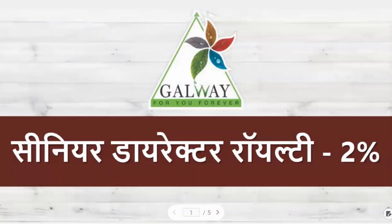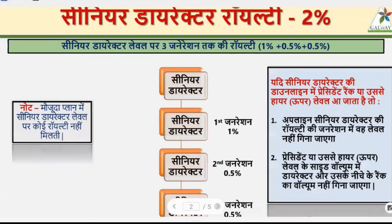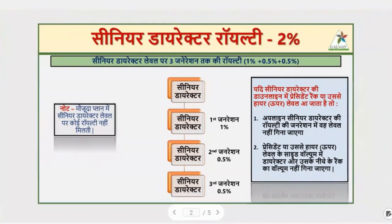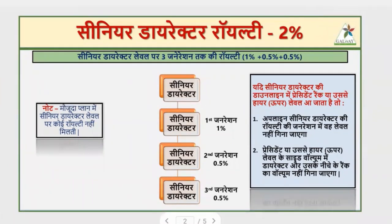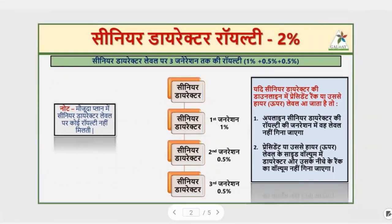You will see the screen: Senior Director Royalty 2%. Here you will see that Senior Director Royalty 2% means Senior Director level — 3 generations — Royalty 1%, 0.5%, 0.5%. The first Senior Director is 1%, the second Senior Director will be 1%, and the third Senior Director will be 1.5%.